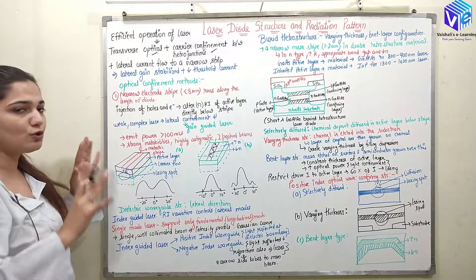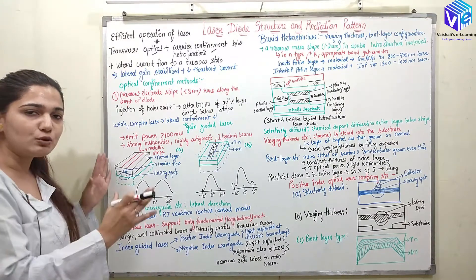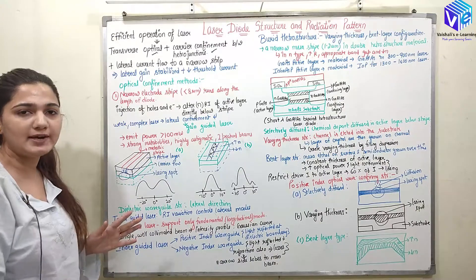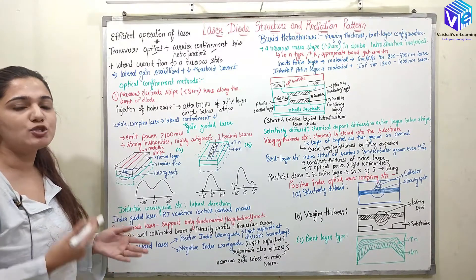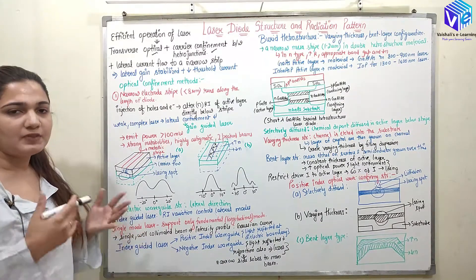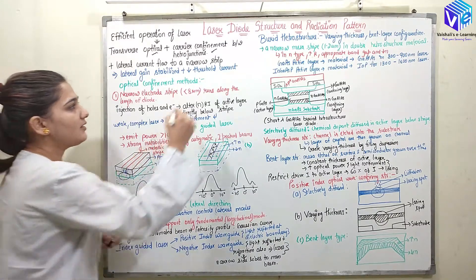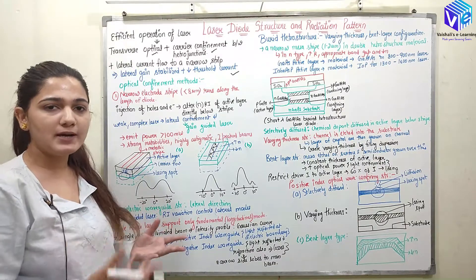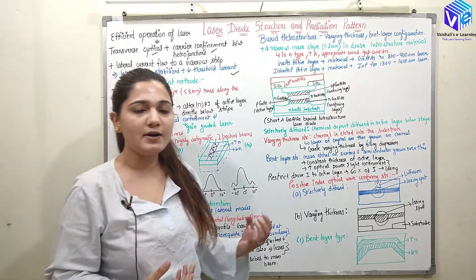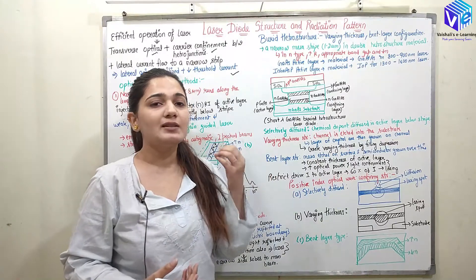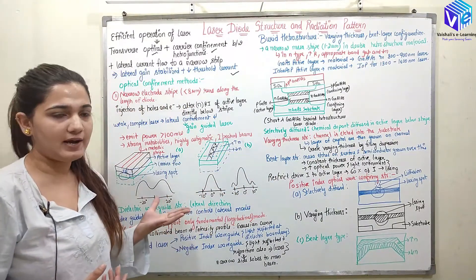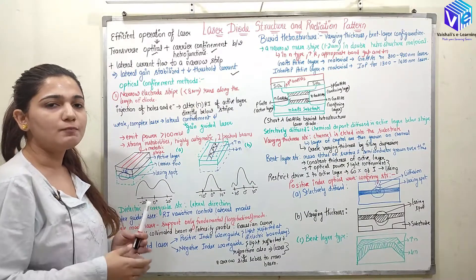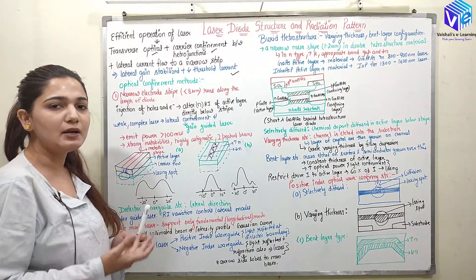So I hope now you understand what is the goal. We have to confine the optical output power and we have to confine the input current as well, so as to stabilize the gain. The threshold current that we are giving should be as minimum as possible. We want to operate our devices at the lowest power, and for that I want to give less current to the device and decrease the threshold current.